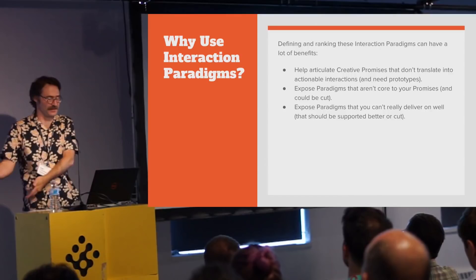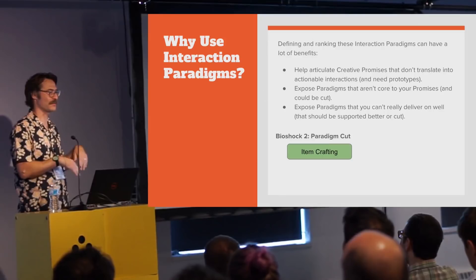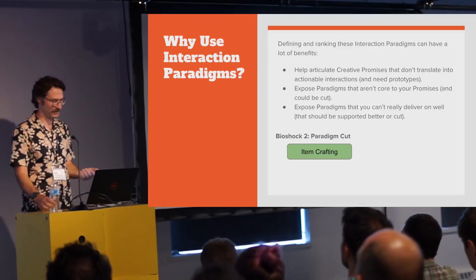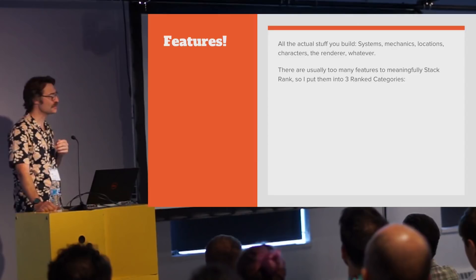You can also start to see interaction types you're not prepared to deliver on because they don't have features supporting them. On Bioshock 2 we had inherited a crafting system from the first game, and after we got our board all lined up, it was pretty obvious it was very low-ranked, didn't really contribute to any of our high-level creative goals, we didn't have features we were excited about for it — so we cut it, and I think no one noticed.